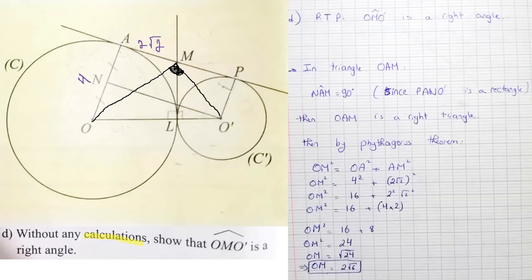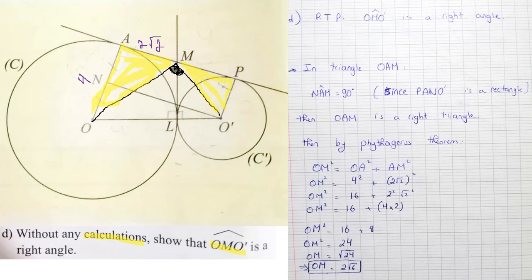Part D: without any calculations, show that OMO' is a right triangle. Without calculations means I should not compute angles directly. The plan is: take triangle AOM, calculate OM; then take triangle PMO', calculate MO'; then apply the converse of Pythagoras to triangle OMO' to show it is right-angled.